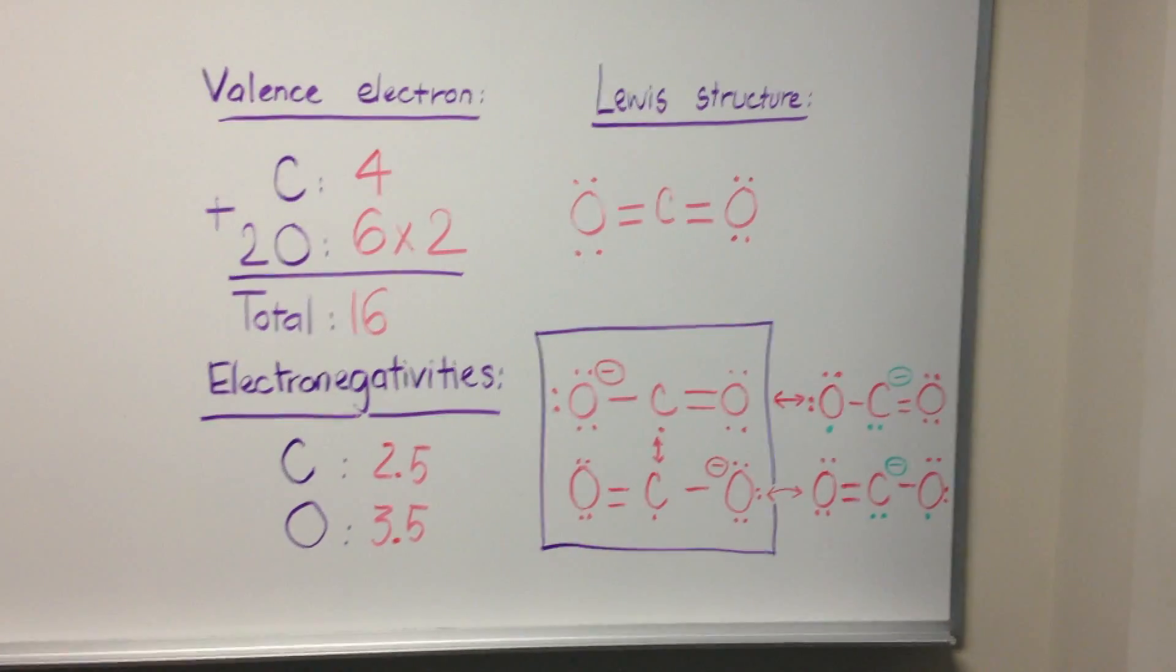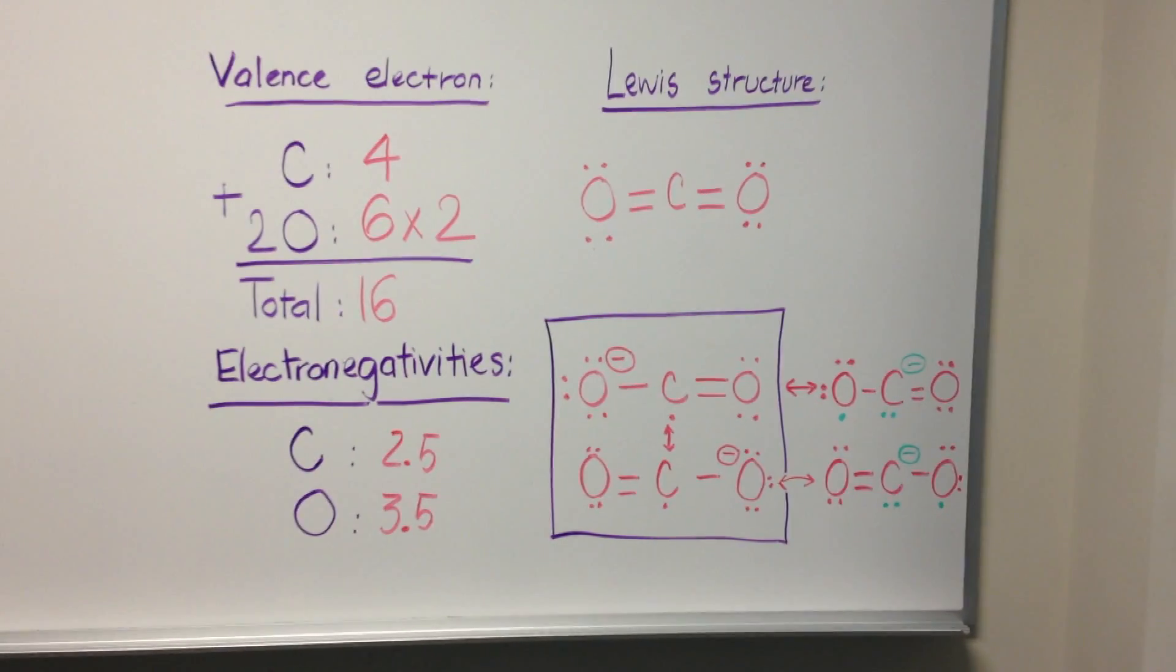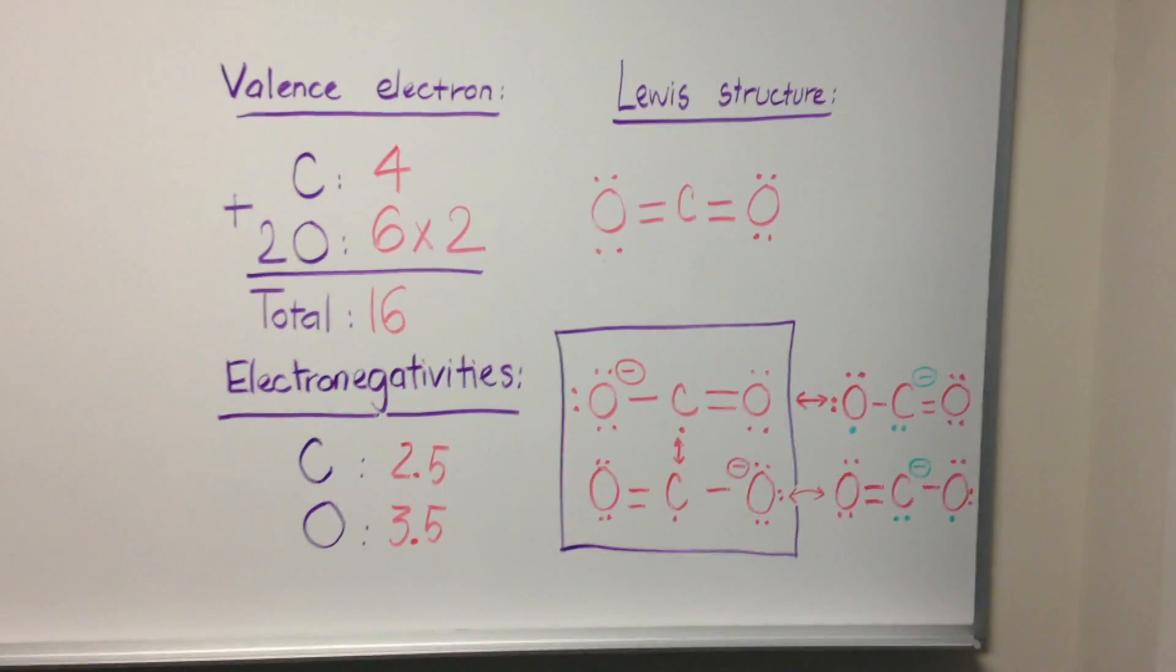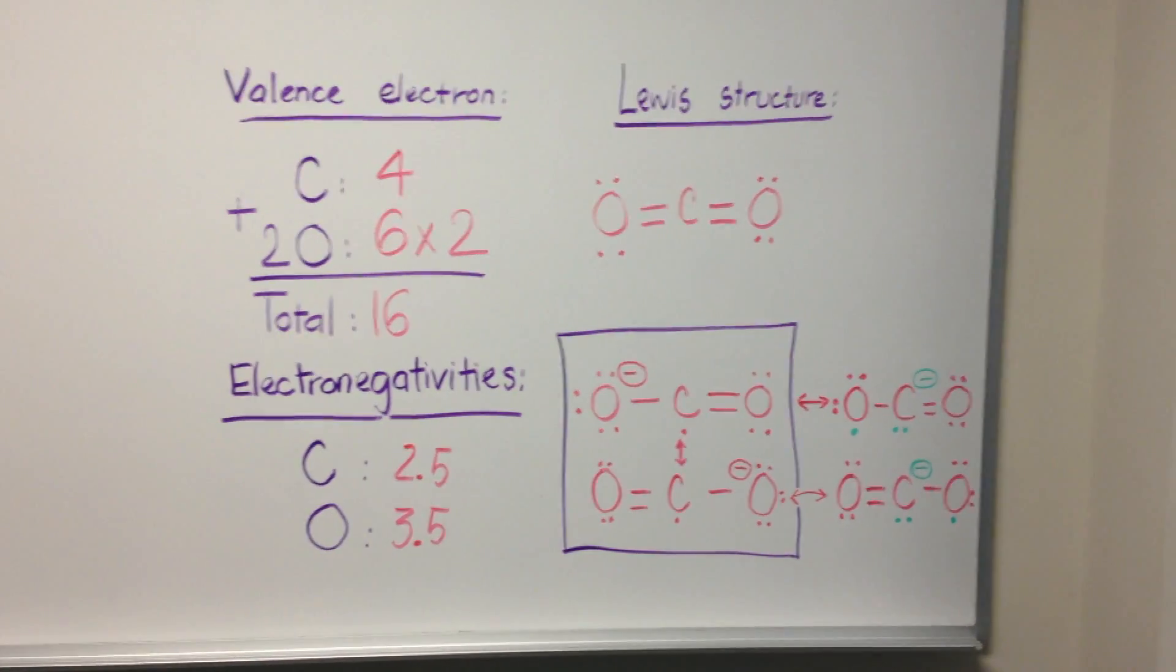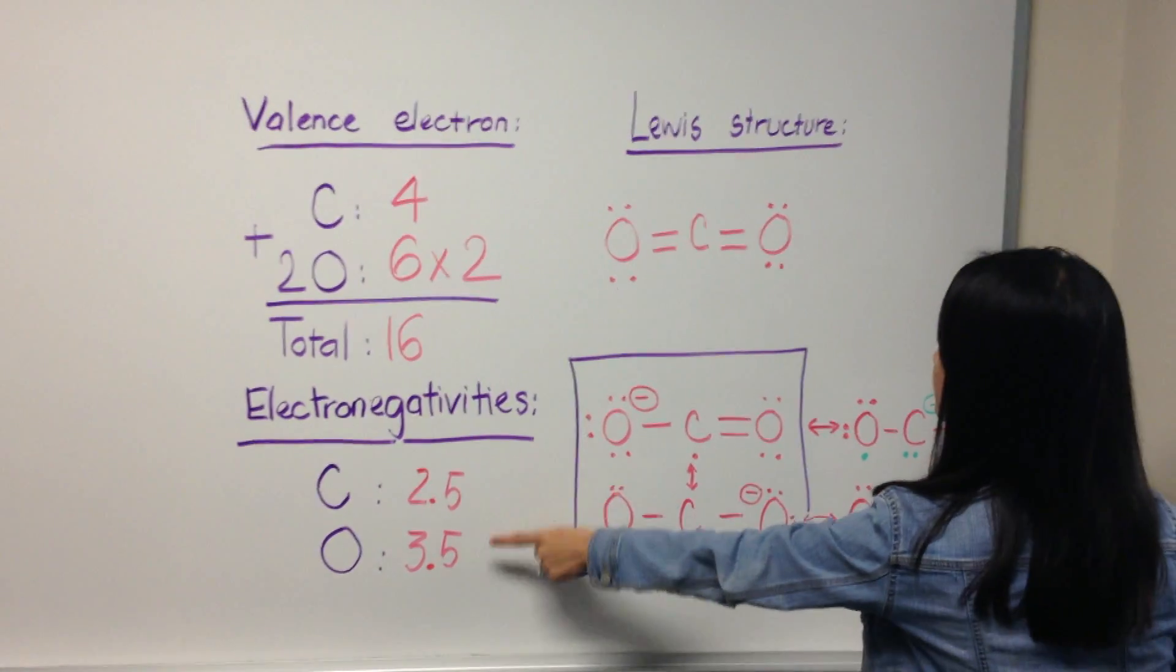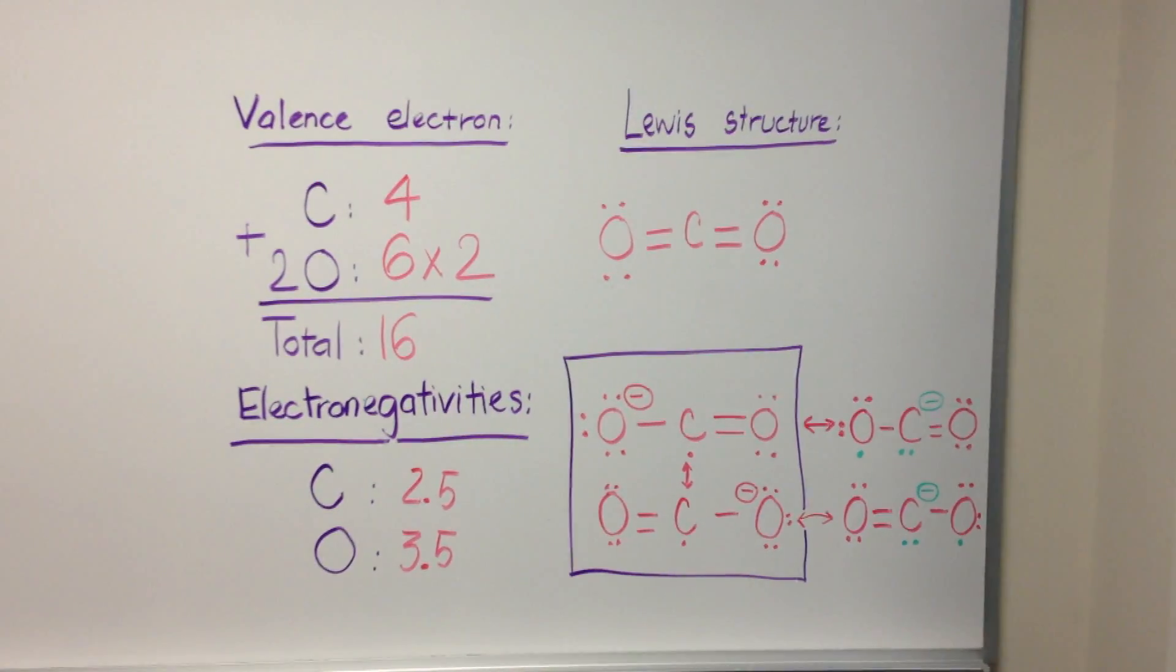However, after gaining an electron, the molecule must adjust into the most favorable conformation. Since neither carbon nor oxygen can expand their octets, one of the atoms must be electron deficient, leading to multiple possibilities, four of which are shown here.